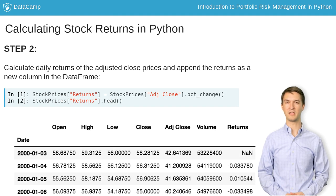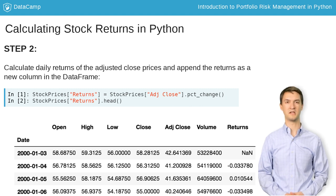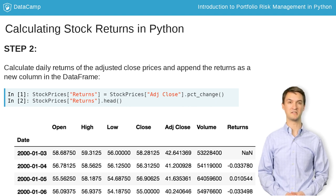Now that you've wrangled the data, calculating daily returns is as easy as calling the .pct_change method on the proper column. If you call the .head method on your returns, you'll notice that the very first period has an invalid return entry. This is because in the first period, there was no previous price to derive the return from.